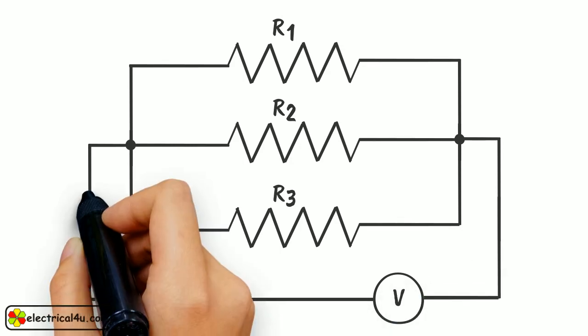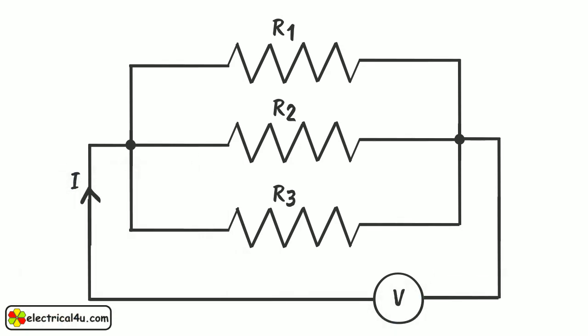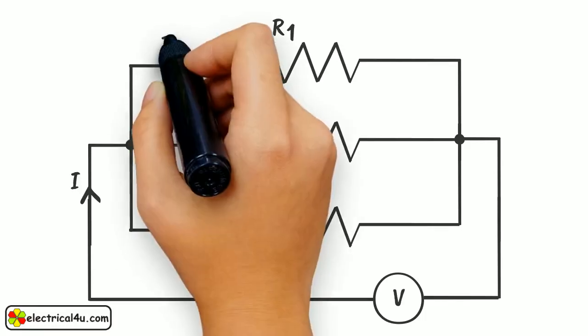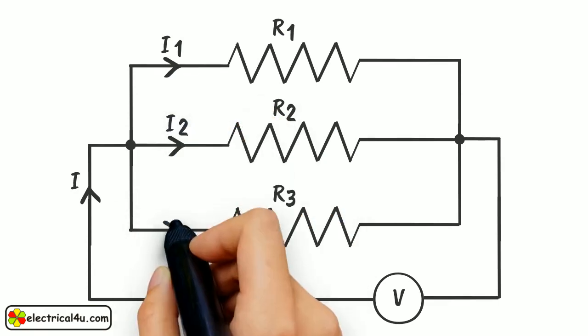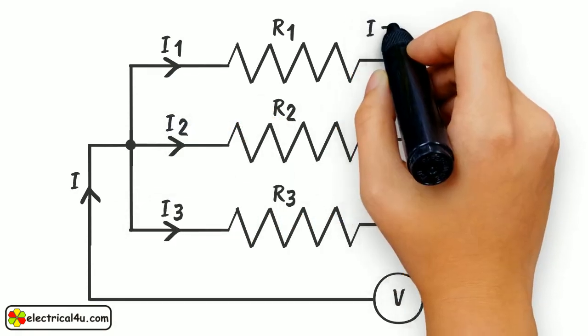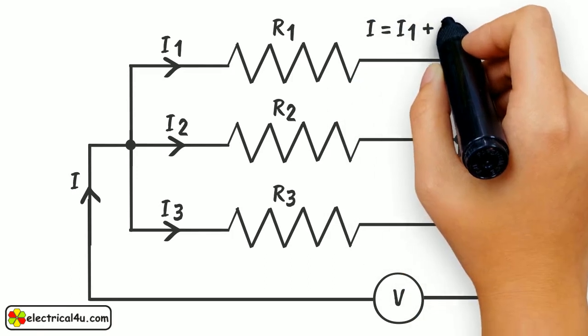The total current drawn from the battery is I. This current gets divided through R1, R2, and R3. Hence, this current gets divided into three parts, I1, I2, and I3. I1 flows through R1, I2 flows through R2, and I3 flows through R3. Obviously, I equals I1 plus I2 plus I3.